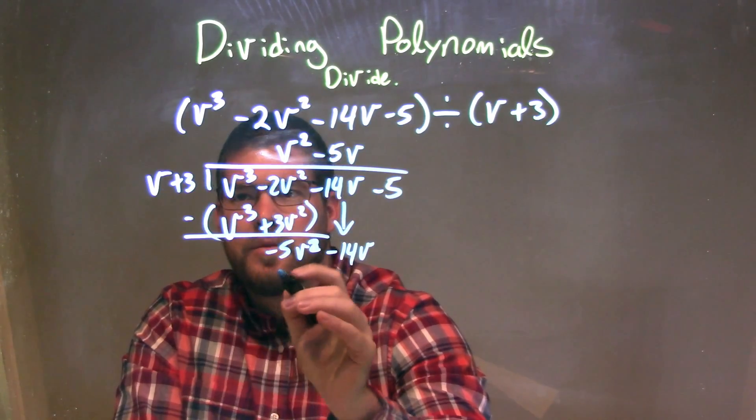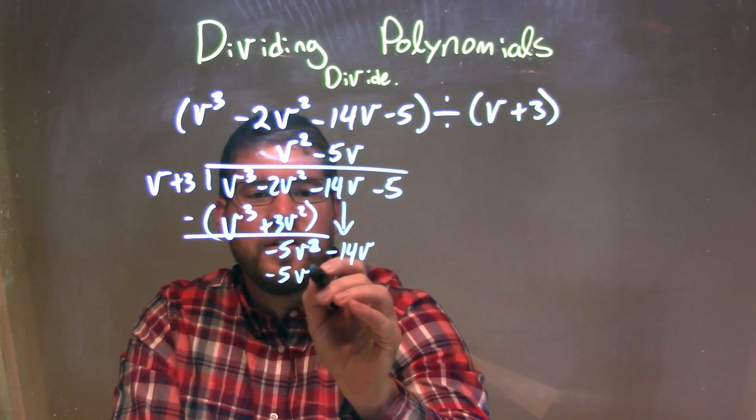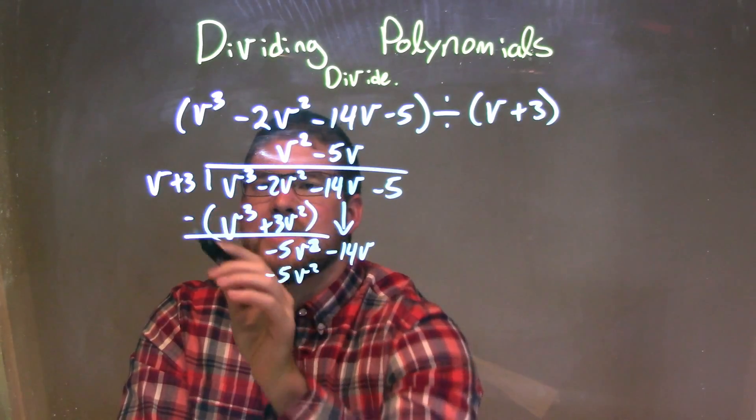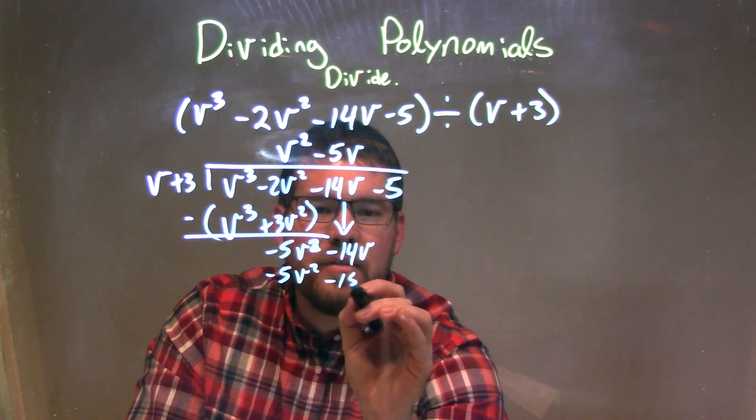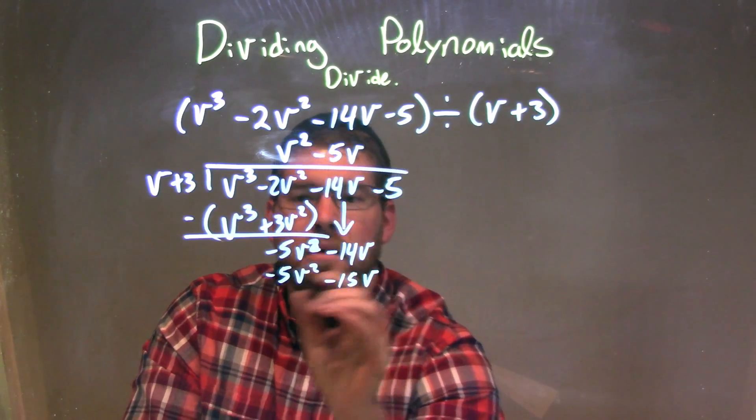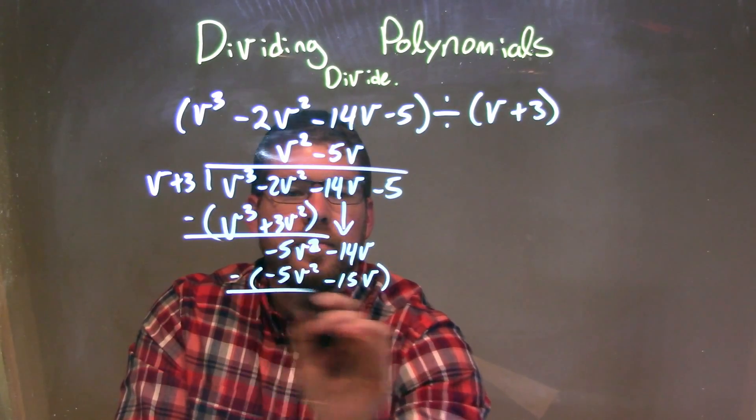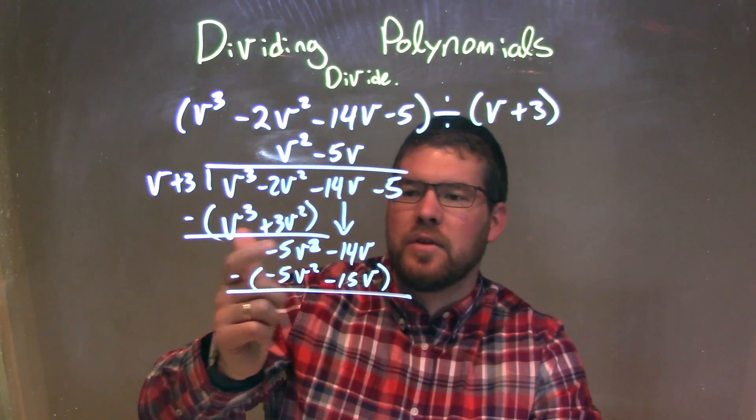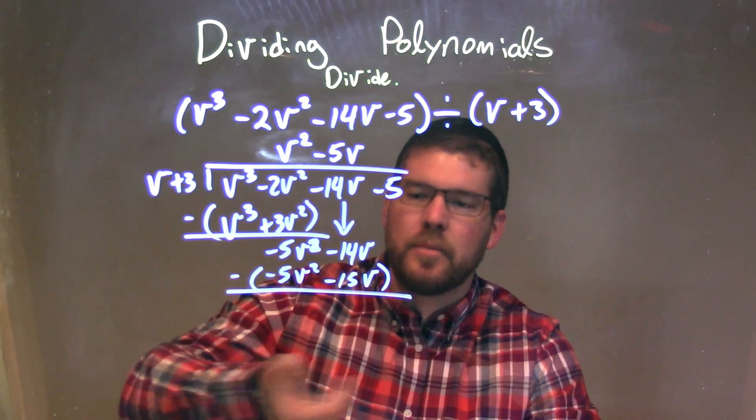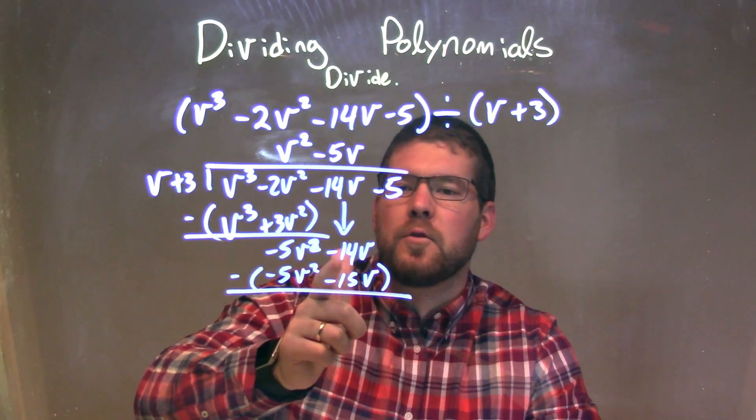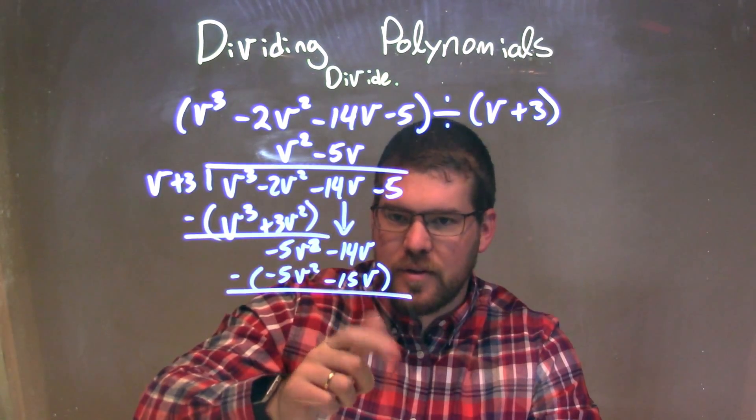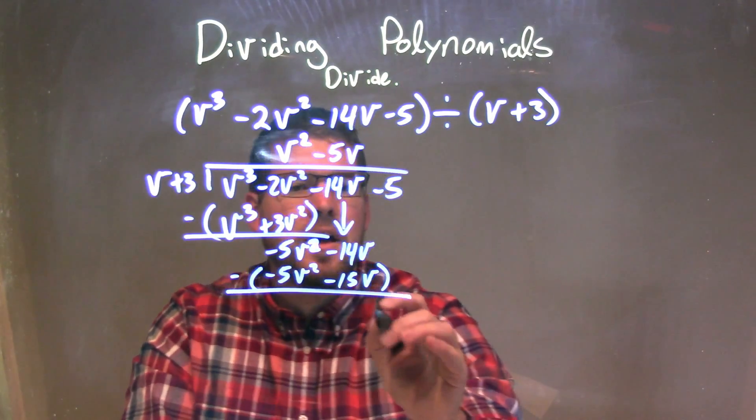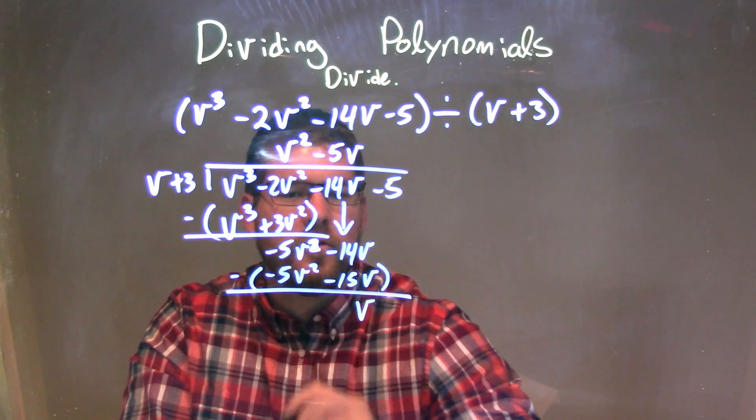-5v times v is -5v². -5v times 3 is a -15v. So subtract the two. Okay, -5v² minus -5v² is like adding a positive, they eliminate, which they should. -14v minus negative 15v is like adding a positive 15v, and it's just a positive 1v.